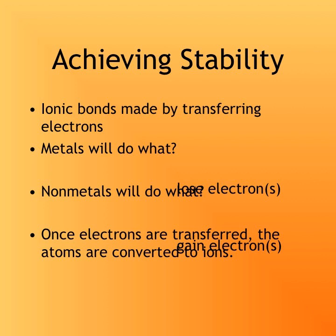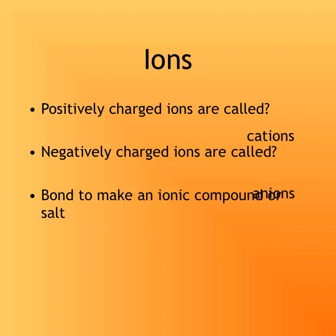Ions have charges that are either positive or negative depending on whether they have lost or gained electrons. Positively charged ions are called cations — they involve atoms that have lost electrons. Since electrons are negatively charged, losing negative things makes you more positive. Non-metals gain electrons and become negatively charged; these are called anions. A cation will bond with an anion to make an ionic compound.